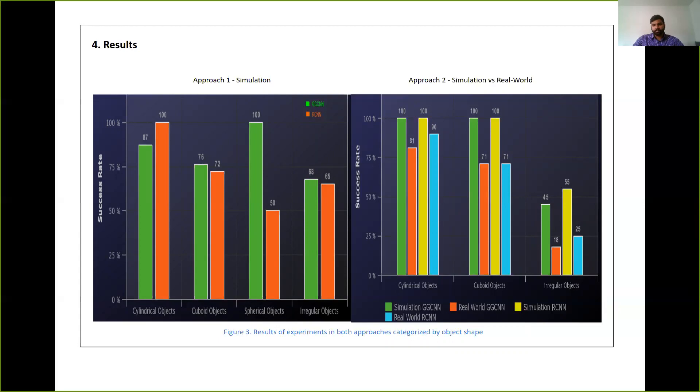So here we can also see that the irregular objects have a lower grasping performance in approach 2 than in approach 1. This is because of the fact that the surface normal vectors generated on irregular objects would be irregular and thus the gripper orientation would also be irregular, which would cause failure in grasping.